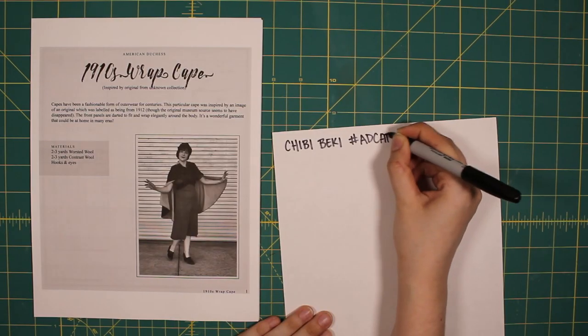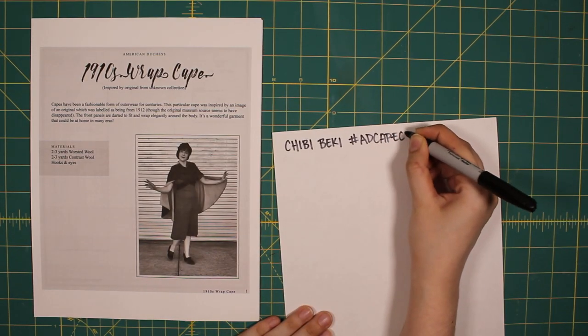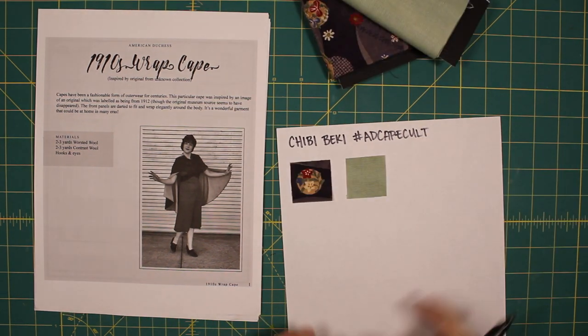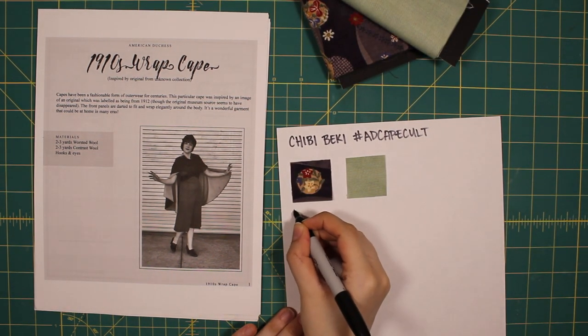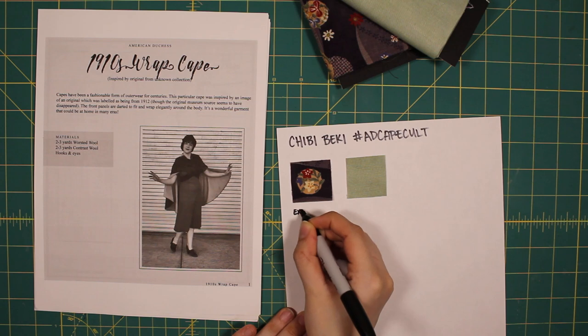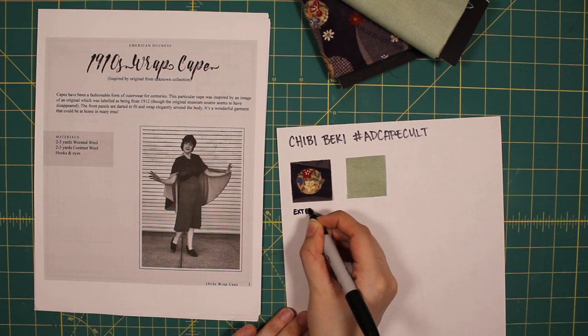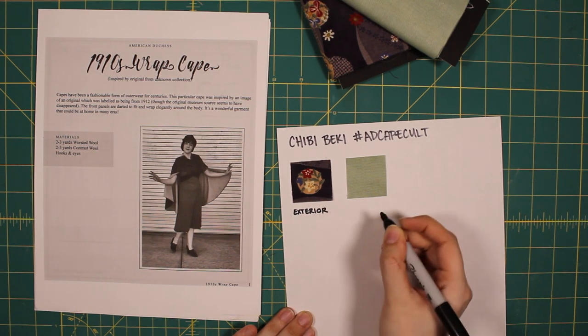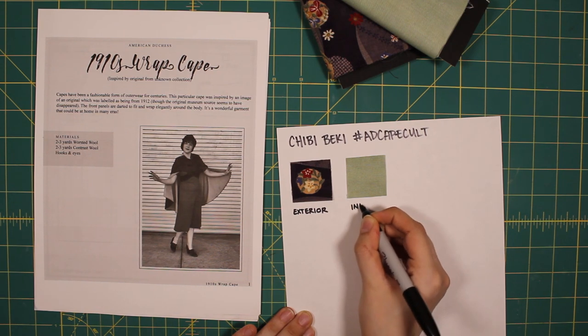So the next case study had to be the American Duchess 1910 Wrap Cape. The pattern and instructions are free to download on their blog, so step one was fetching those. I had it on file from late last year when a girlfriend and I made full-sized ones during a socially distanced weekend.